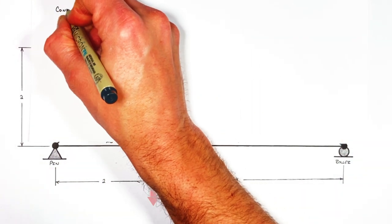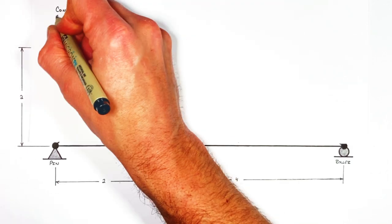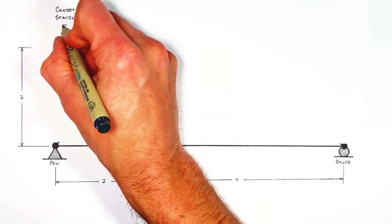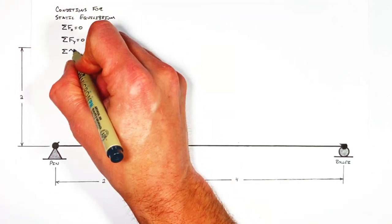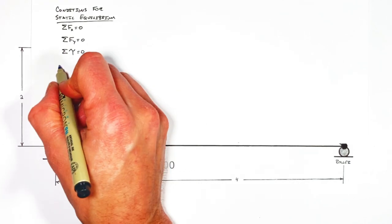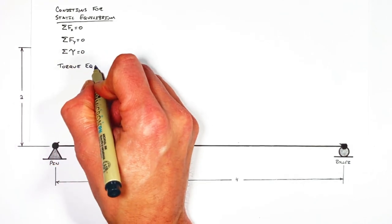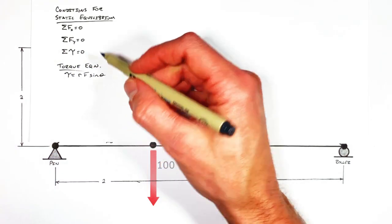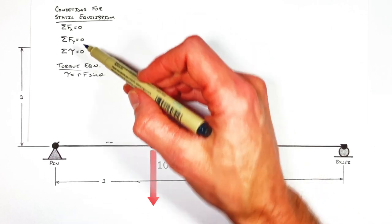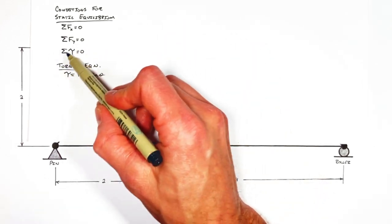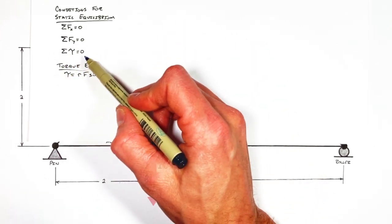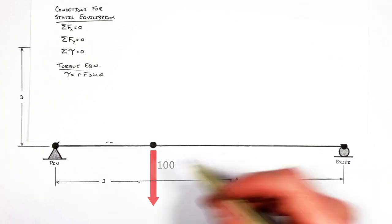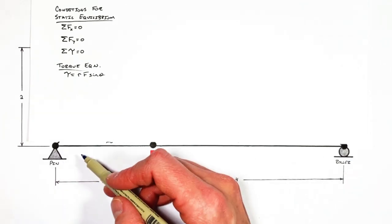To solve for the reaction forces, let's turn to our equations for static equilibrium, and more specifically, the torque equation. The conditions for static equilibrium say that the sum of all torques around any point, including these supports, must add up to zero.